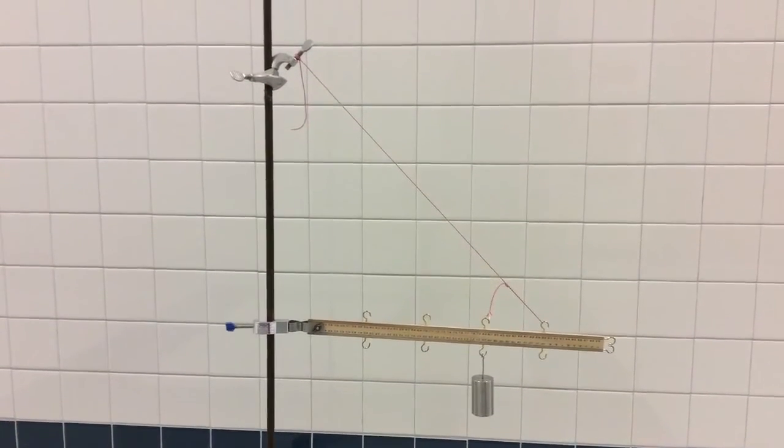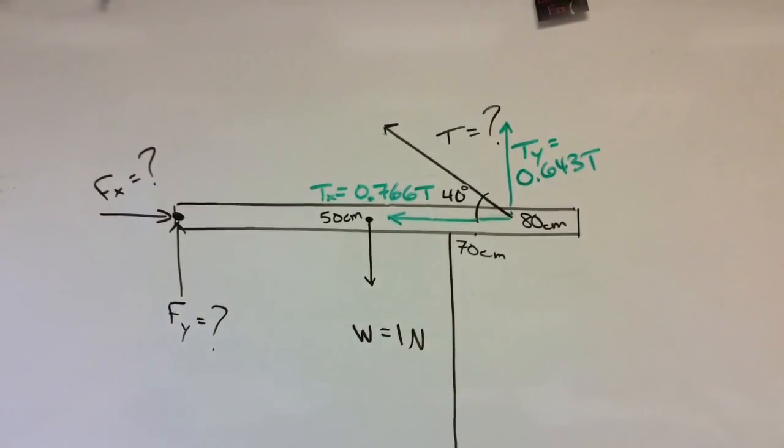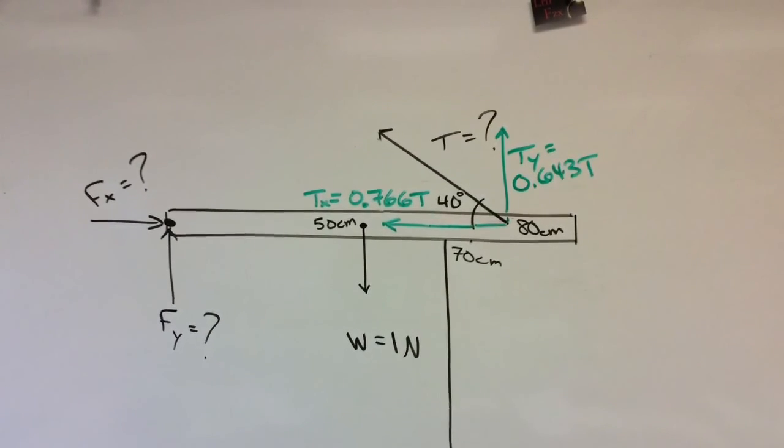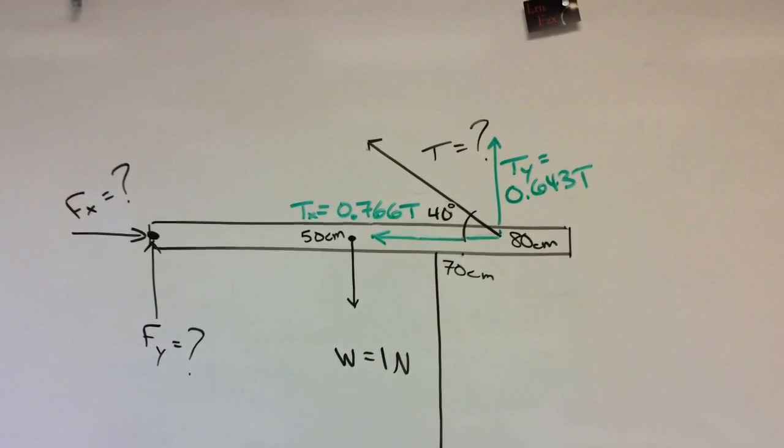Second possible convenient point is the attachment point for the tension. And if you choose that point, then you would eliminate the tension and only have Fy as an unknown, and the Fx.